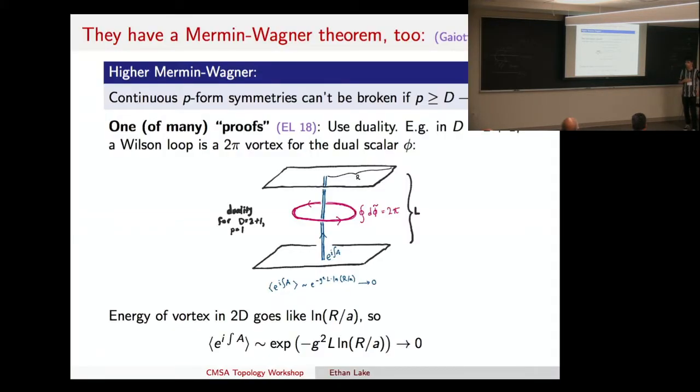Okay, and then also, accordingly, you can talk about when they can be spontaneously broken. So, if we have a continuous, again, p-form symmetry, so the charge objects are p-dimensional, then if the dimension of the charge objects is dimension of space-time minus two, then you can't have spontaneous symmetry breaking. So, for example, I mean, there are many ways to see this, but to kind of convince you,